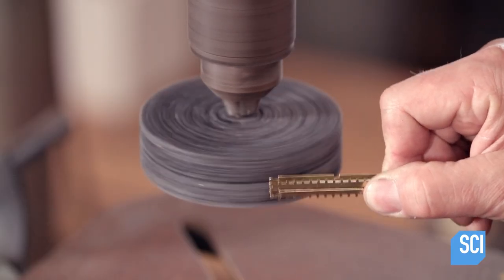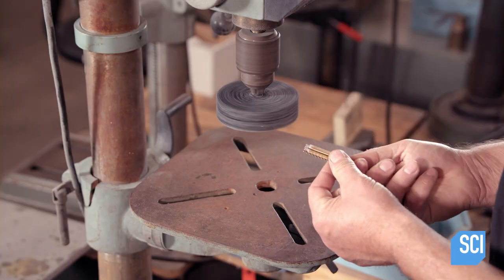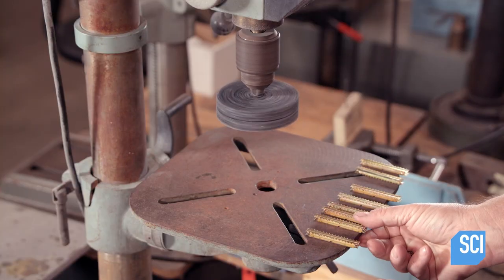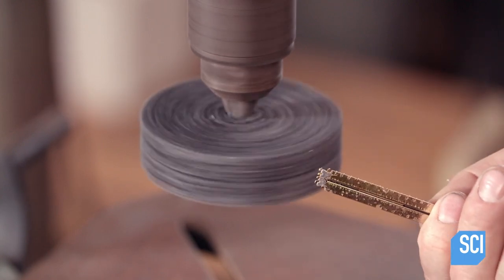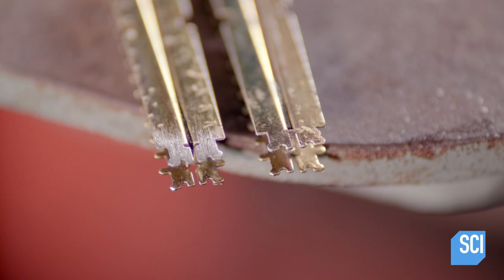Using an abrasive wheel, he scuffs off the finish on the end of the bobbin to prepare it for soldering. The scuffed bobbin is the one on the left.